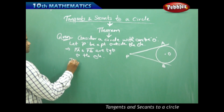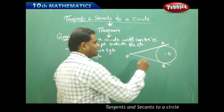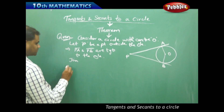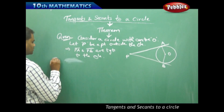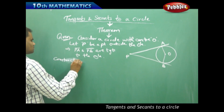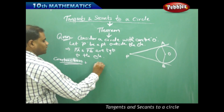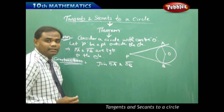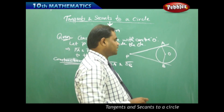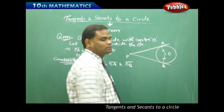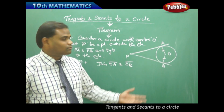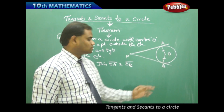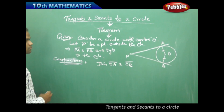For the construction, we join OA and OB, which are the radii of the circle. Since OA and OB are radii, they are equidistant from any point to the center, therefore OA is equal to OB.